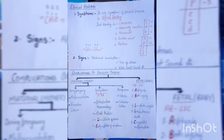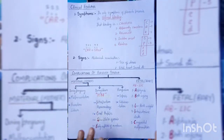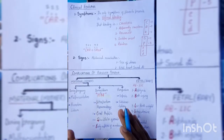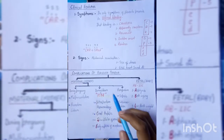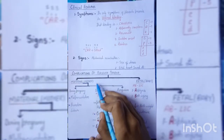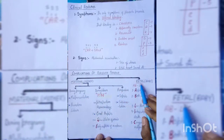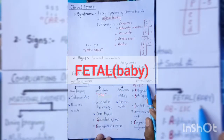Complications of placenta previa are divided into maternal side (mother) and fetal side (baby). Let's first look at the fetal side complications.